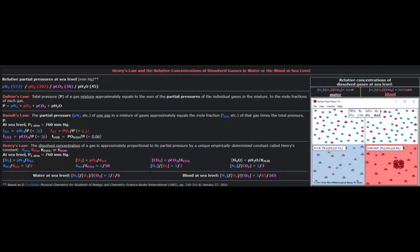Dalton's law states the total pressure of a gas mixture approximately equals the sum of the partial pressures of the individual gases in the mixture, to the mole fractions of each gas. Raoul's law states that the partial pressure of one gas in a mixture of gases approximately equals the mole fraction of that gas times the total pressure, P. At sea level, we call this one atmosphere, or 716 millimeters of mercury. At this point, we have an atmospheric mixture of gas at a constant of one atmosphere. We can then break down the ratios of the various gases in the mixture, which are listed.